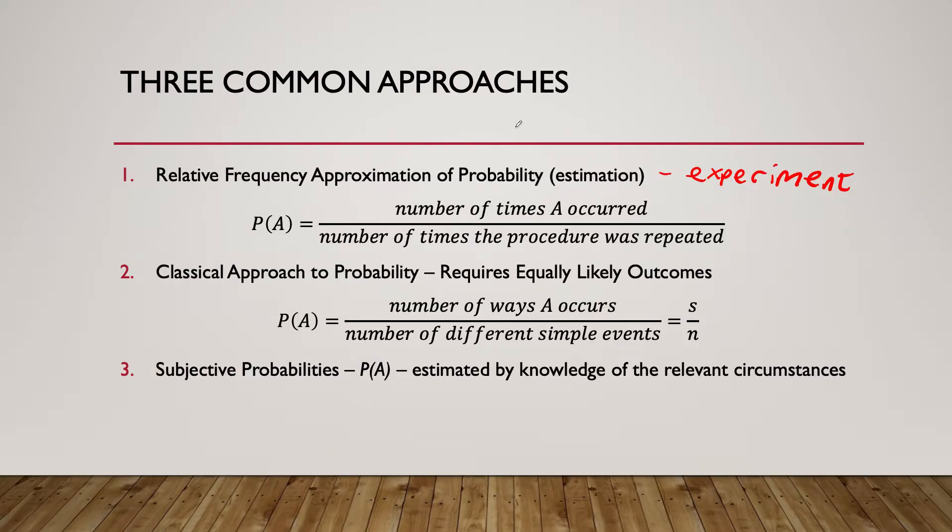There are three common approaches when it comes to probabilities. Technically there are two, the third one is just an overall gist. The first one is the relative frequency approximation of probability, basically an estimation. This is where we use an experiment, obtain data, and find the probability. Probability of A equals the number of times event A occurred divided by the total number of times the procedure was repeated.